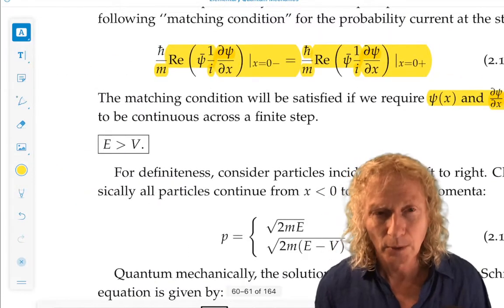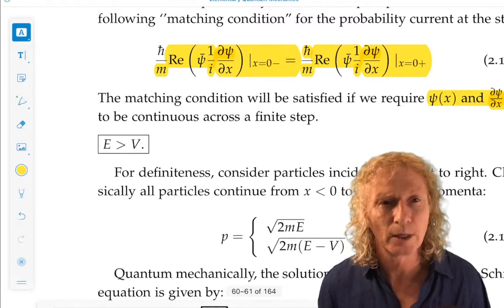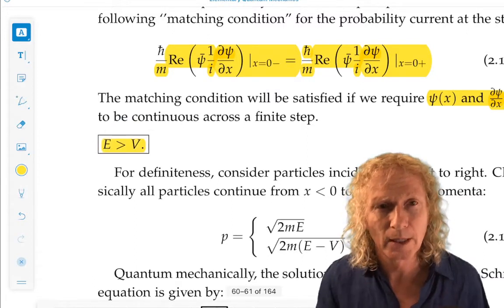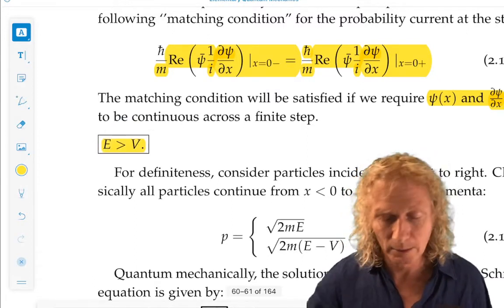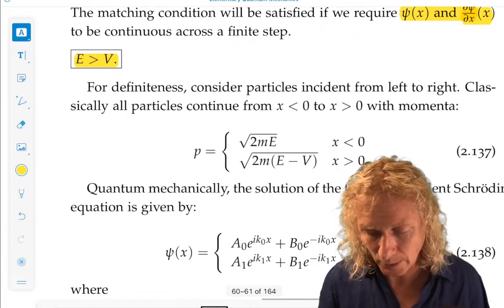So, there are two cases to consider. Total energy bigger than the potential step. That would agree with classically allowable motion. And total energy smaller than the potential step. And that's going to be an interesting case that we look at.